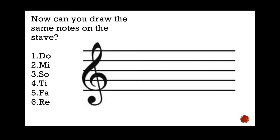Now, can you draw the same notes on the stave? Can you draw the correct note of DO — where would that be on the stave? Then MI, then SO, then TI, then FA, then RE. Remember that you can skip back to the C major scale to check your answers.